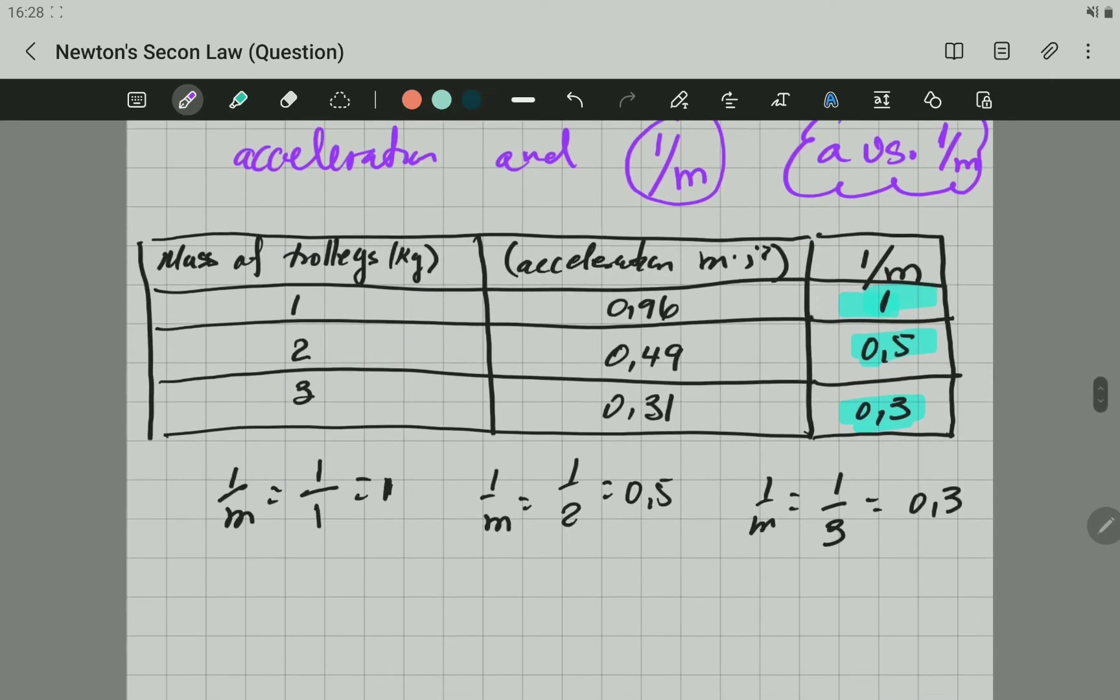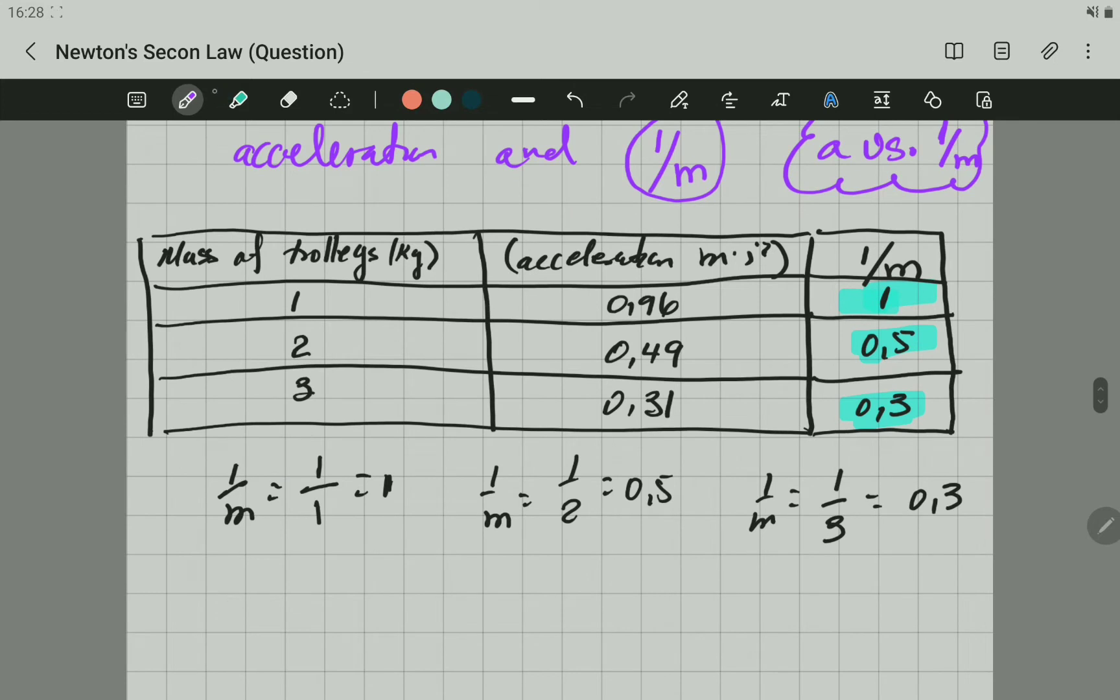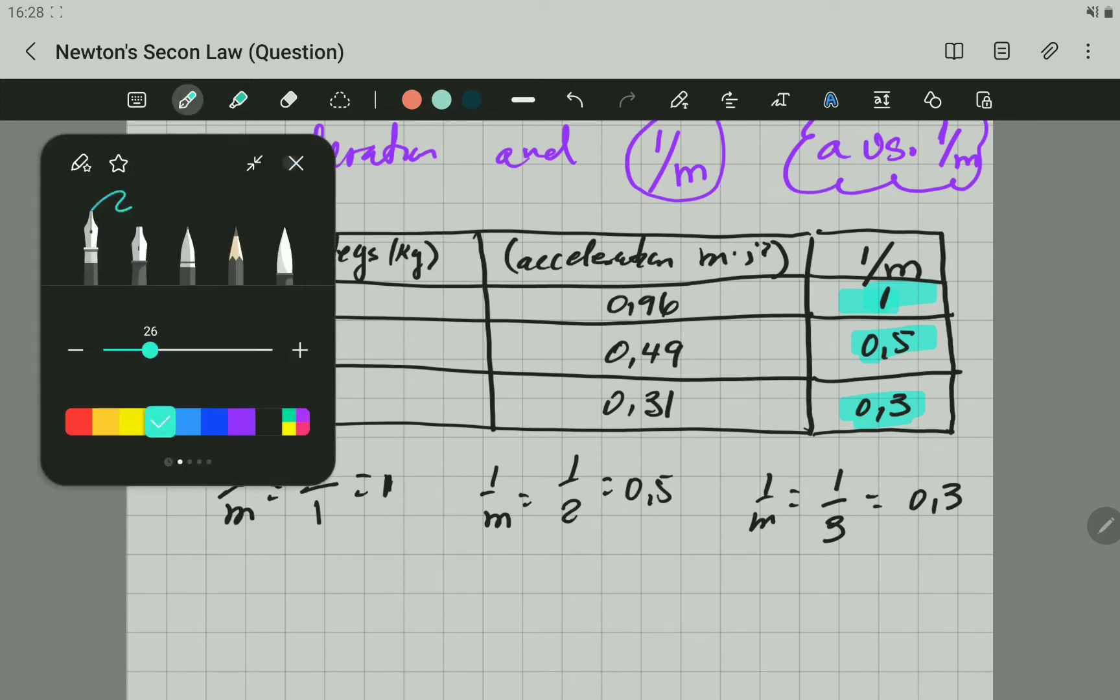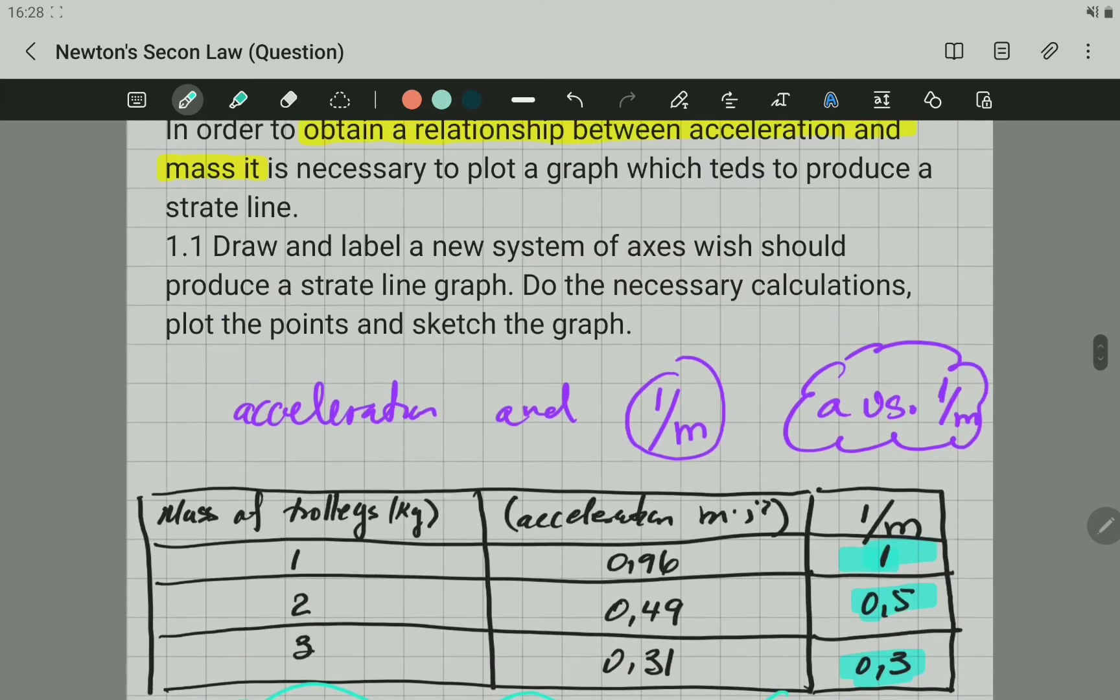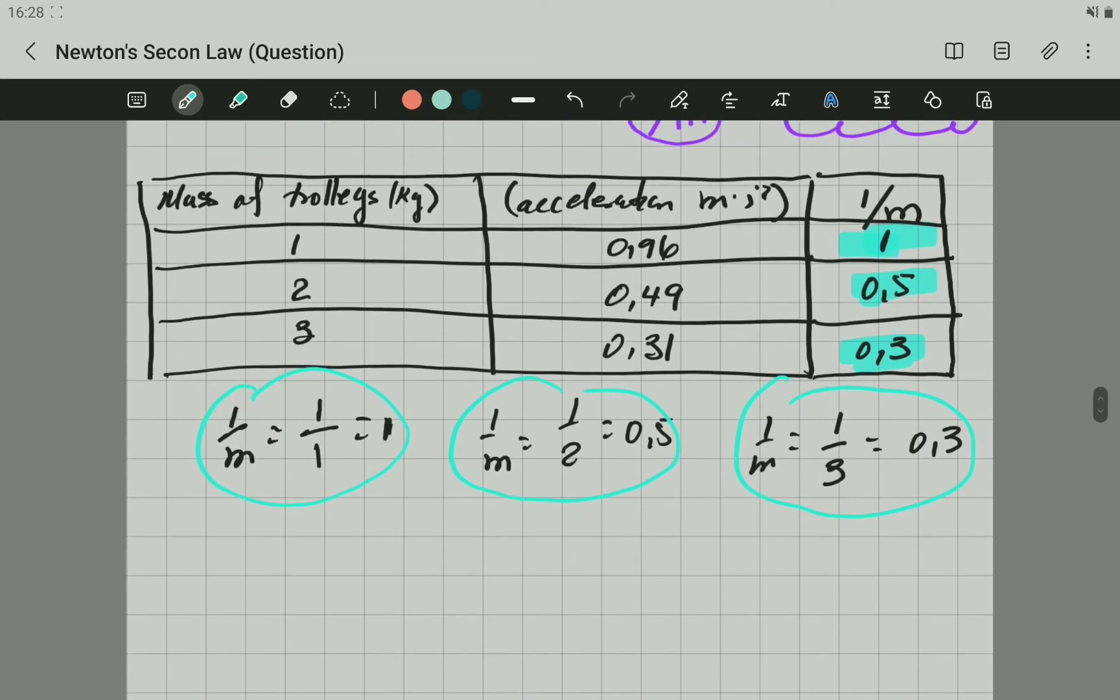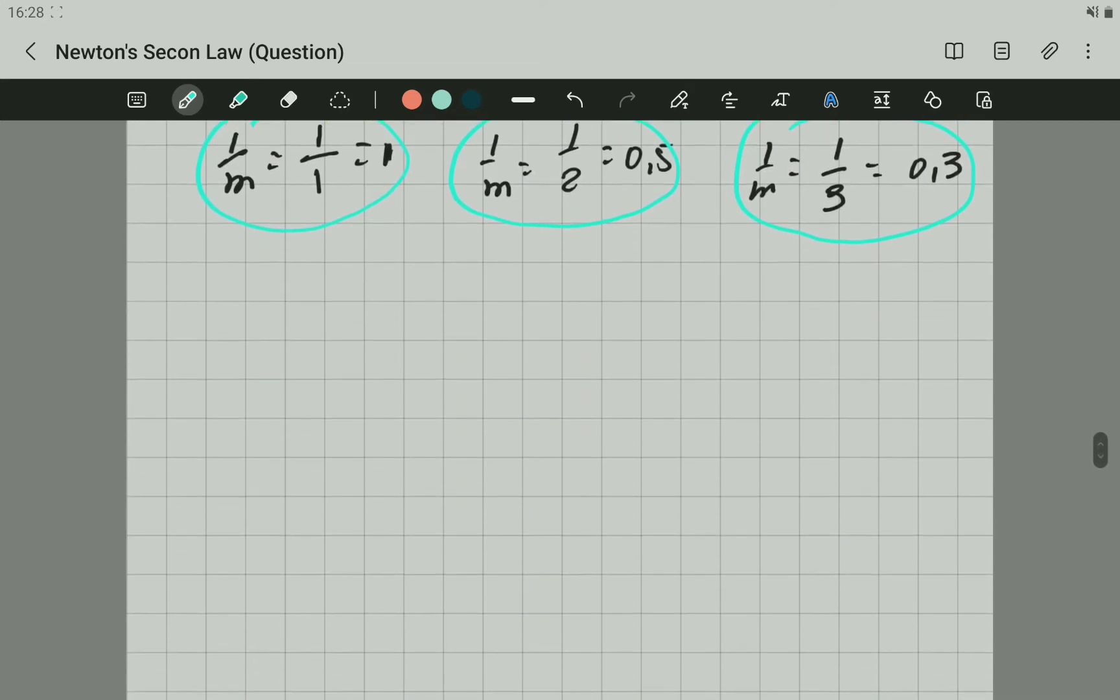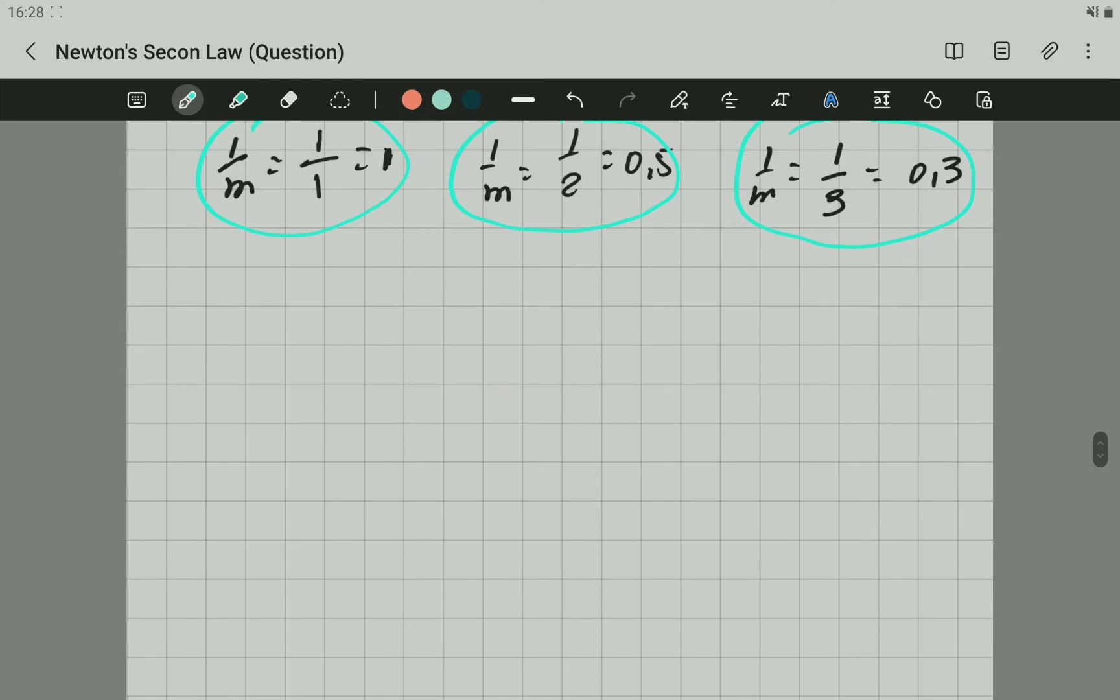Do the necessary calculations. Here are the calculations for each of the different cases. Here is the first one. This is the second reading. And this is for the third reading. And then obviously we include it in the table. We will plot the points and sketch the graph. I'm going to copy the axes quickly and I'll be back with you in one minute.